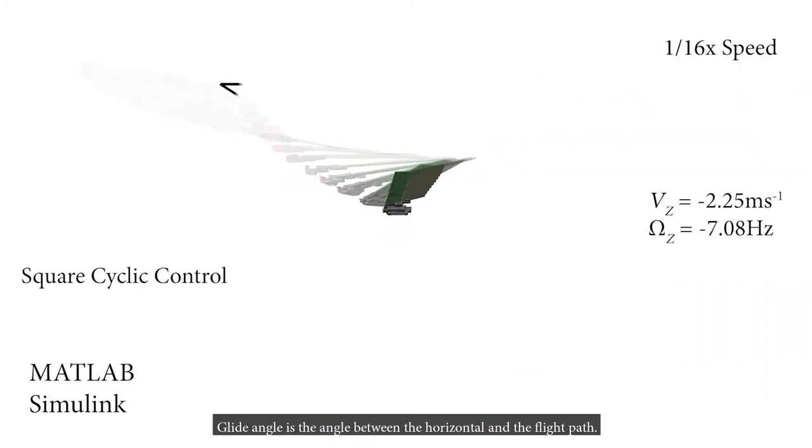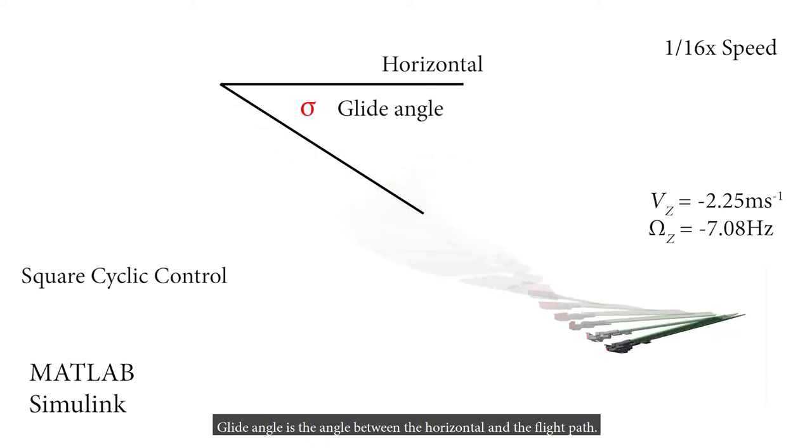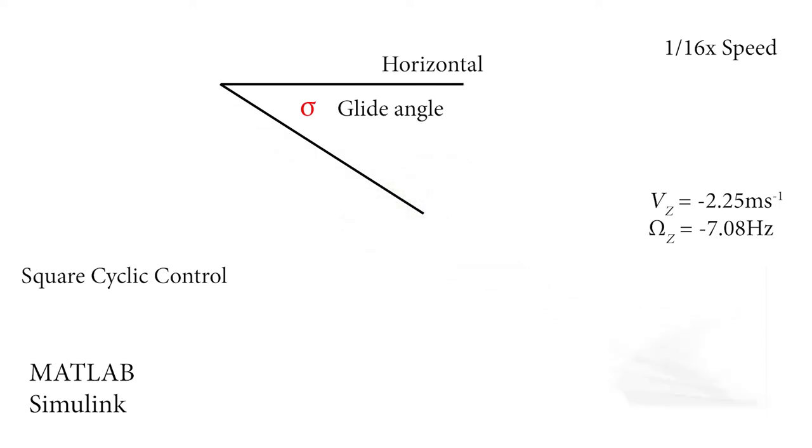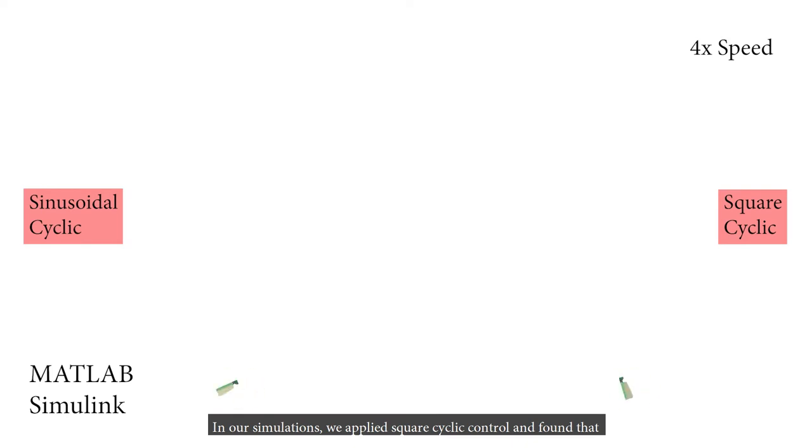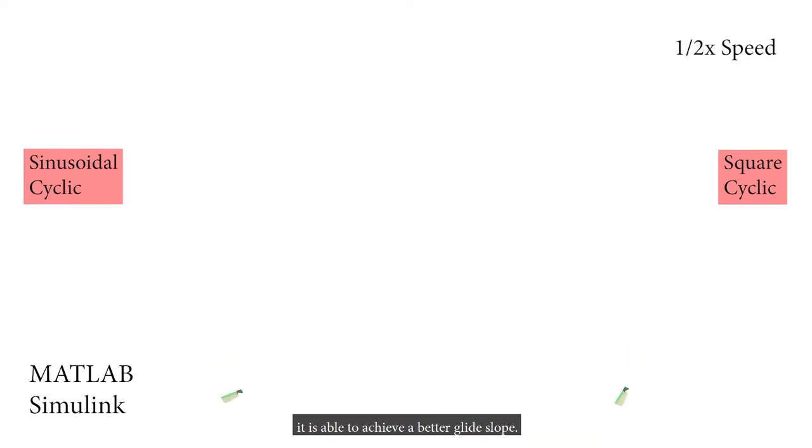Glide angle is the angle between the horizontal and the flight path. In our simulations, we applied square cyclic control and found that it was able to achieve a better glide slope.